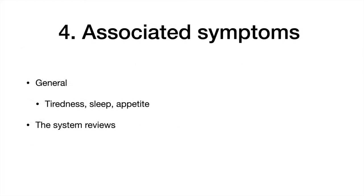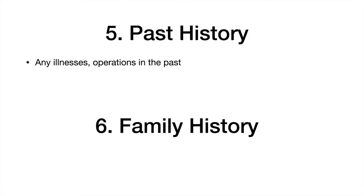After the history of presenting illness, ask about associated symptoms — including general symptoms such as tiredness, sleep, and appetite, as well as fever and rash. Then perform a systems review, asking questions related to each system so you can rule out the differential diagnoses.